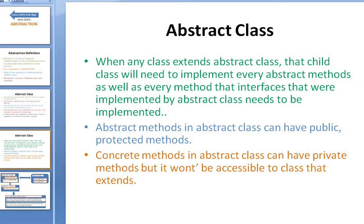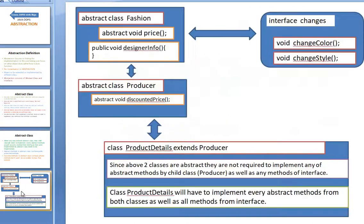Similarly, when one abstract class extends another abstract class, the compiler won't force you to override the abstract methods that the parent class had. Abstract methods can be public or protected — you cannot have private abstract methods, because they are supposed to be overridden outside of the class. However, concrete methods inside the abstract class can be private, but these are only used within that one class and cannot themselves be abstract.